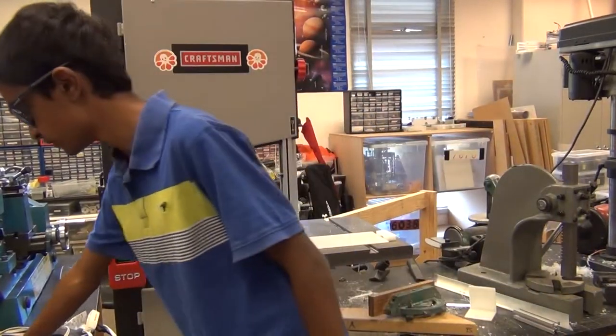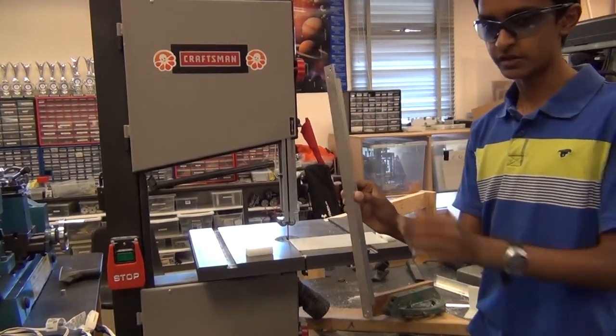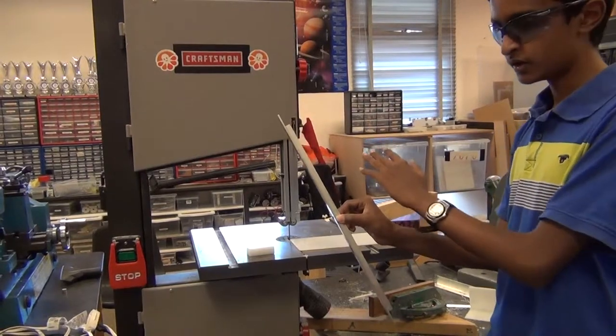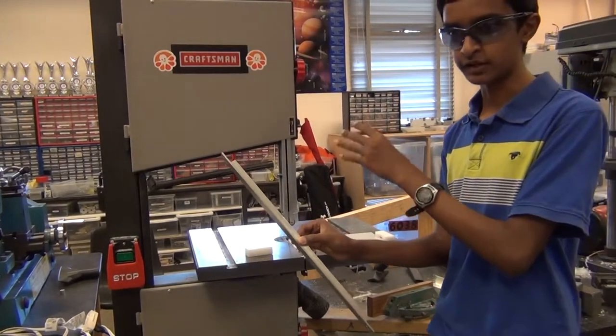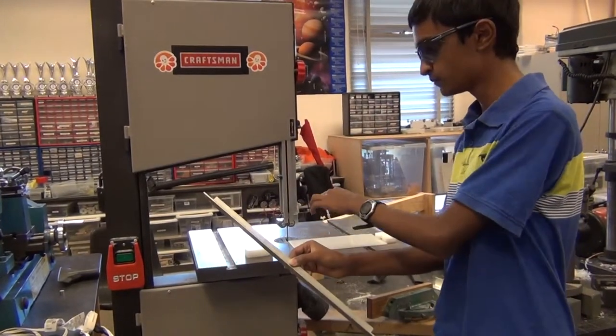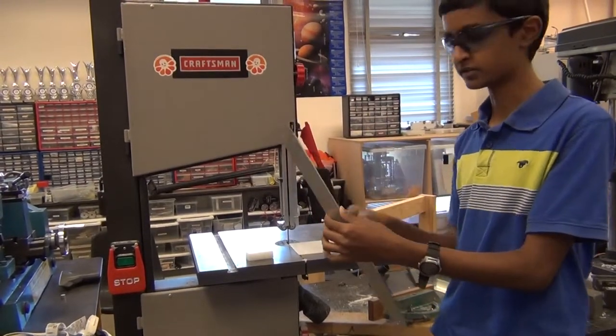So there's a method which involves setting up a fence. This basically sets an outer barrier that regulates the distance between the blade and the fence so that you would get a precise cut.